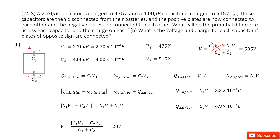To find the total initial charge, we take the absolute value of Q1 initial minus Q2 initial, since they are in opposite directions. The final total charge is Q1 after plus Q2 after. We input Q1 initial, Q2 initial, Q1 after, and Q2 after as functions, and then solve this equation to get the function for V.